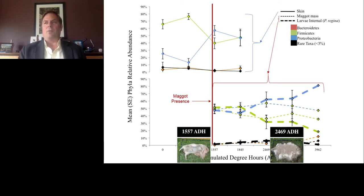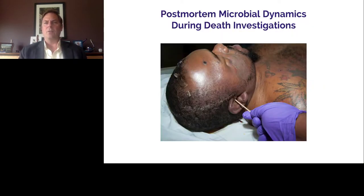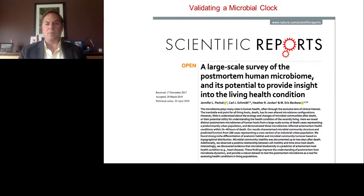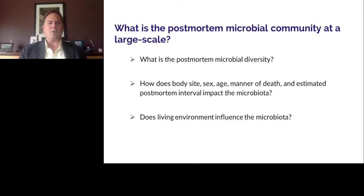That is part of developing a microbial clock where you take sequential samples as a carcass or human cadaver decomposes over time. But in real-life death investigations, you only get one opportunity to sample the case. So it's important to understand how much variability there is not only on a body but among bodies within certain populations of humans. We published this a couple of years ago, validating that research microbial clock of sequential samples over time, given that we could only sample cases once during the death investigation. Our questions were: what is the postmortem microbial diversity, and how does body site, sex, age, or manner of death affect the estimated postmortem interval?